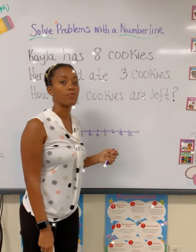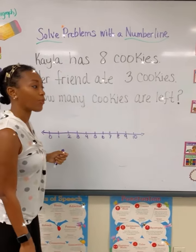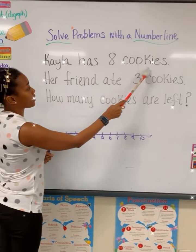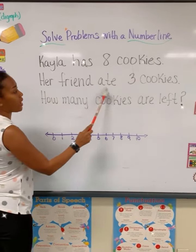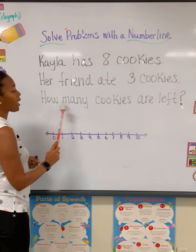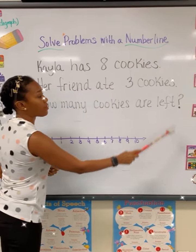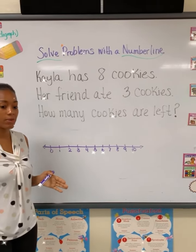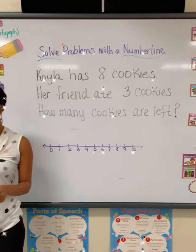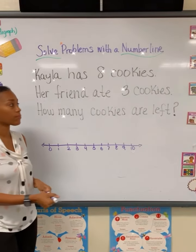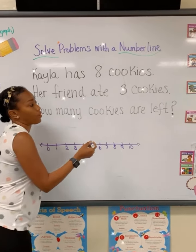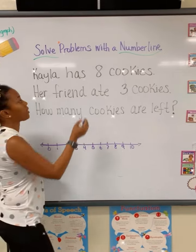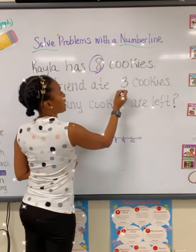Let's see if we can solve another word problem. Class, read with me please. Kayla has eight cookies. Her friend ate three cookies. How many cookies are left? Who can tell me what's the first thing I do when I'm trying to solve a math word problem? Circle the numbers you're working with. What numbers am I working with? Eight and three.